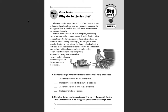Follow along as I read through the passage, and we'll move on to parts A and B. A battery contains only a fixed amount of reactants. So as soon as these reactants have been used up, the reaction stops and the battery goes dead. A dead battery produces no more electrons and no more electricity. However, some batteries can be recharged by connecting them to a source of electricity, such as a wall outlet.